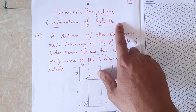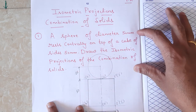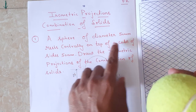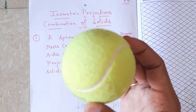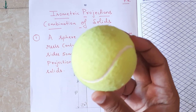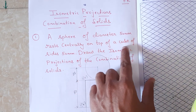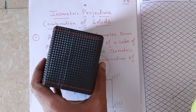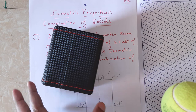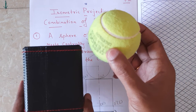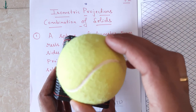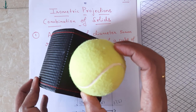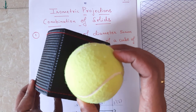To explain this, I have taken one problem. The problem is: there is a sphere of diameter 50 mm, which rests centrally on top of a cube. A cube has six faces and all six faces are equal. So this sphere is resting on the central top face of the cube, and you have to draw the isometric projection of this combination of solids.